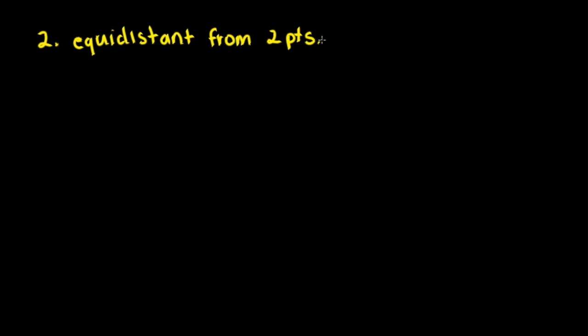The second of the famous five is equidistant from two points. In a plane, which is two-dimensional, if we have two points, what would be the locus of points that are equidistant from these two points? That would be any point along this locus of points here. You can see that this is a perpendicular bisector in a plane.